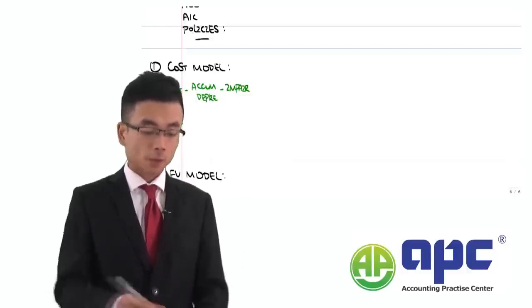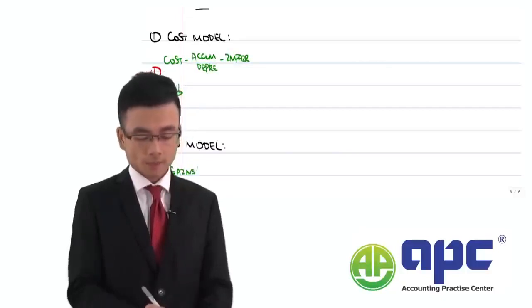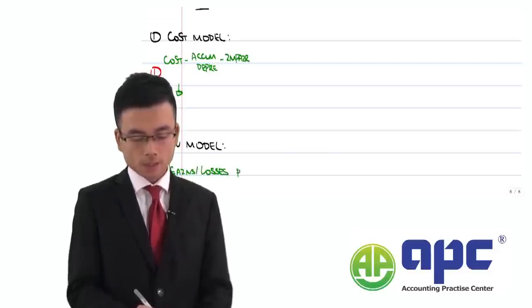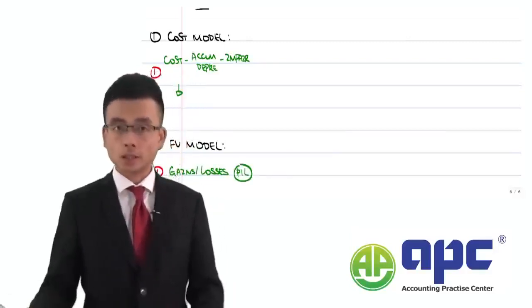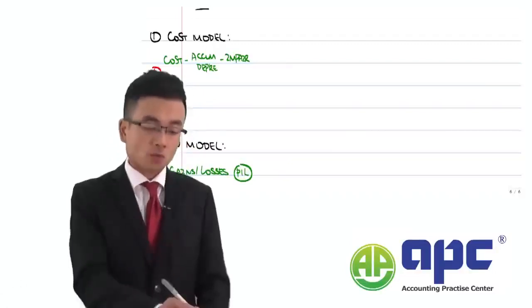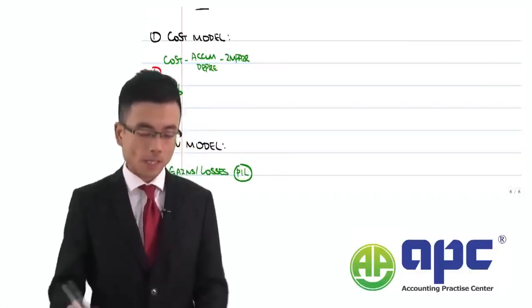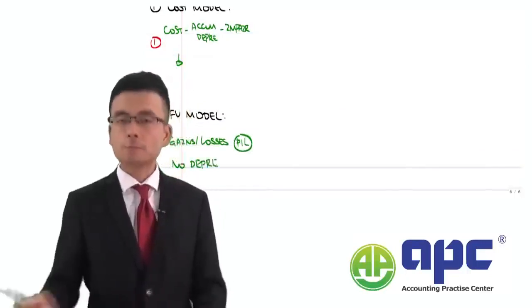How about the fair value model? Well, you would say that the gains and losses would directly go into the P&L. That's another point that you can get. Of course, you can also mention in the fair value model because you've never accounted for it before, that's why there'll be no depreciation for that as well. No problem for that.